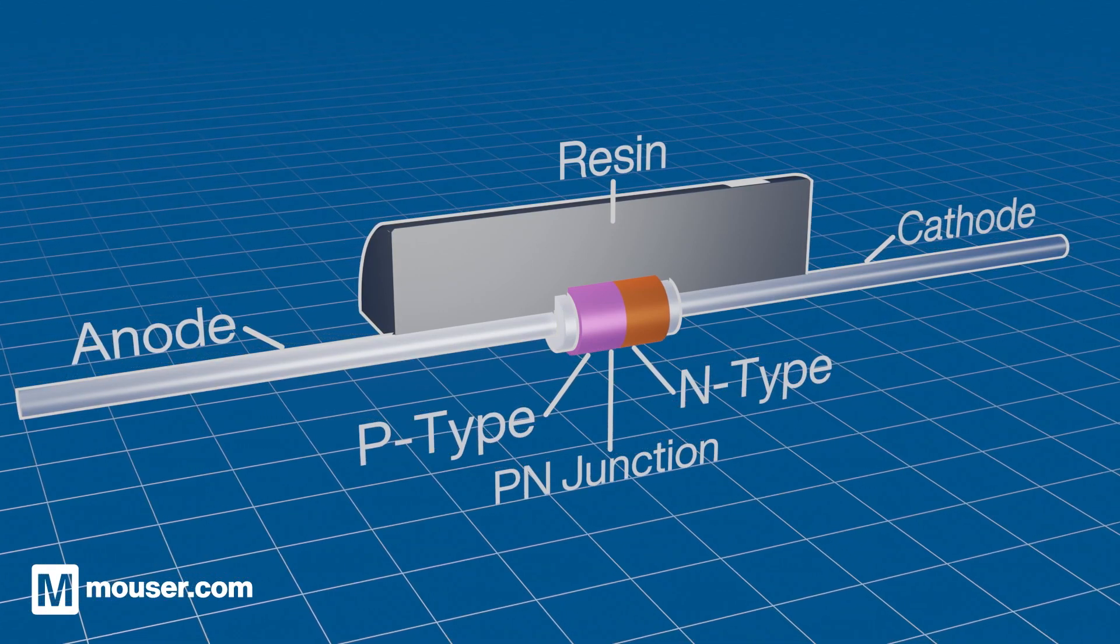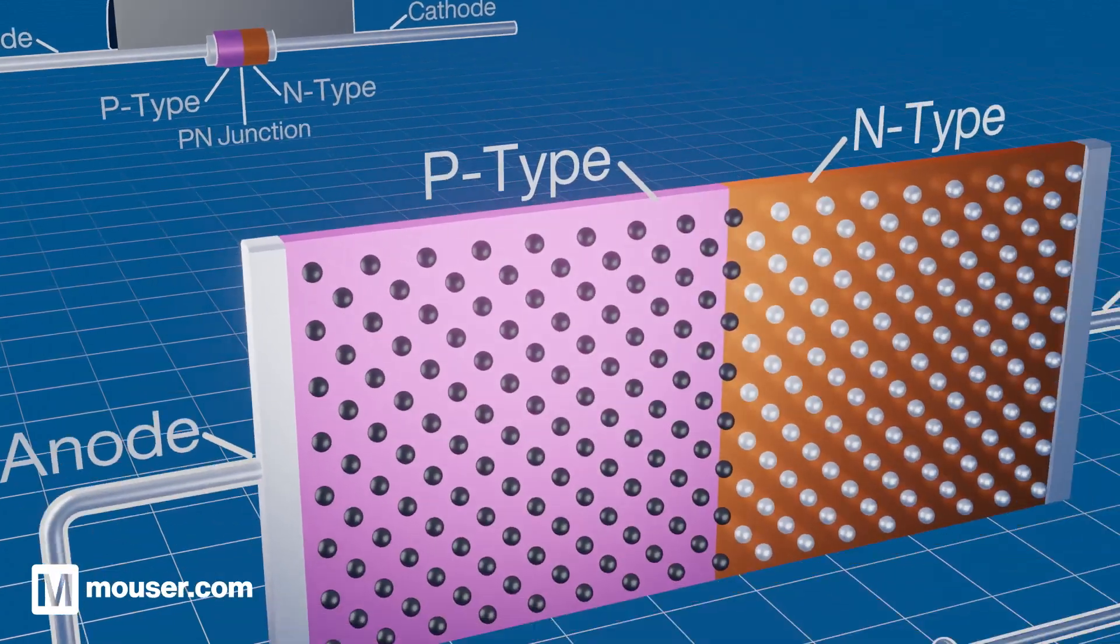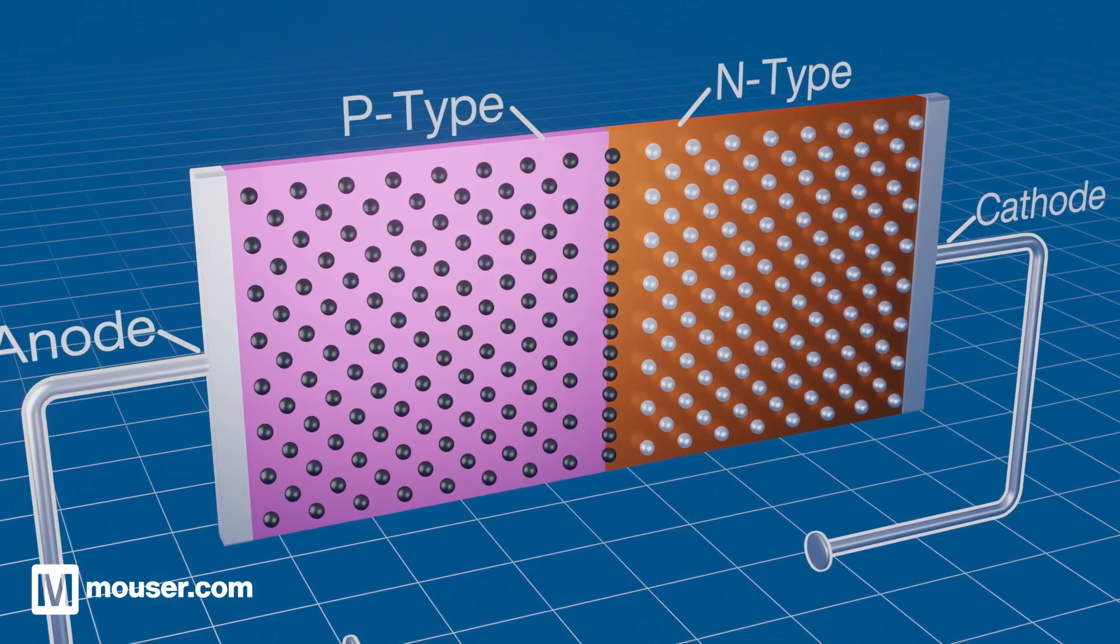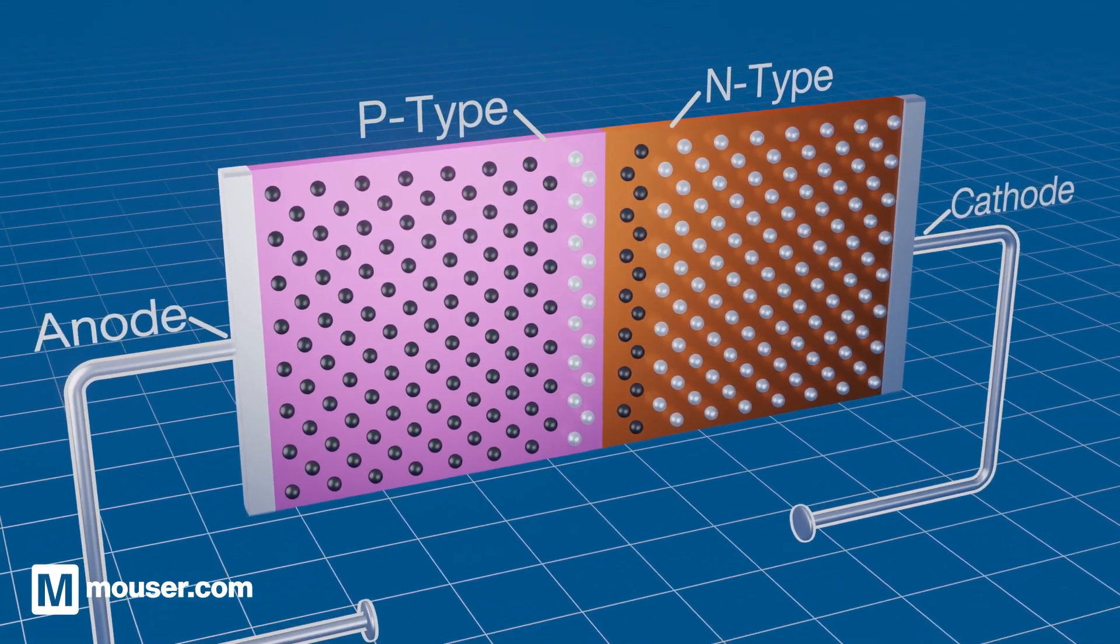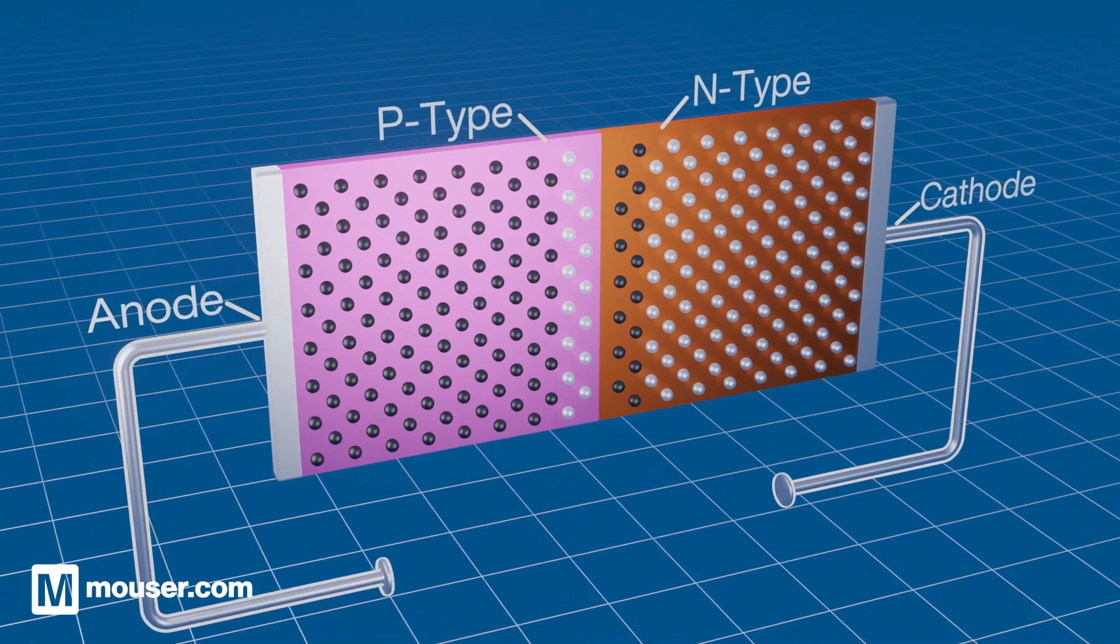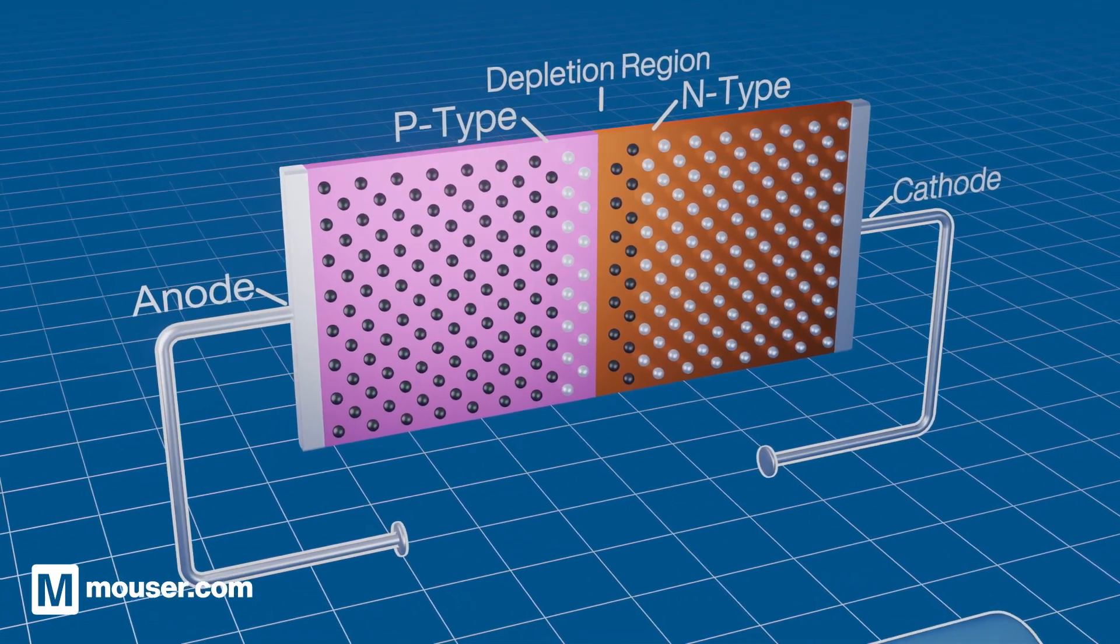Carried by free electrons, in the unconnected diode, electrons flow from the N to the P-side and holes from P to N until no further movement is possible and a depletion region is formed.